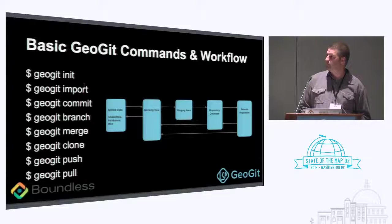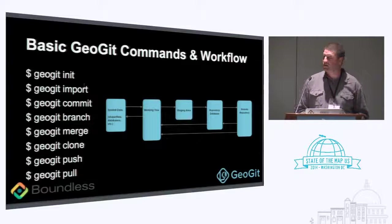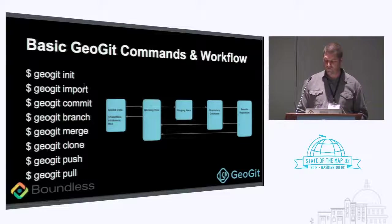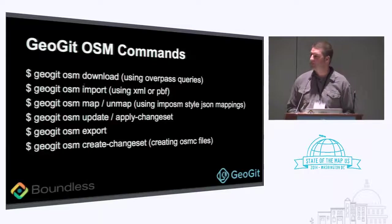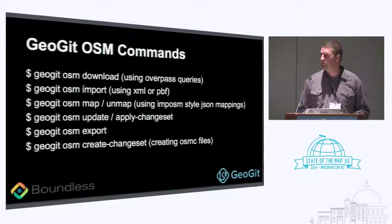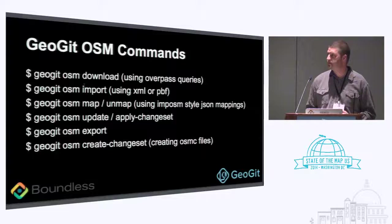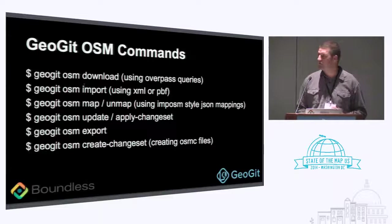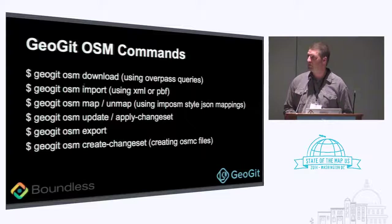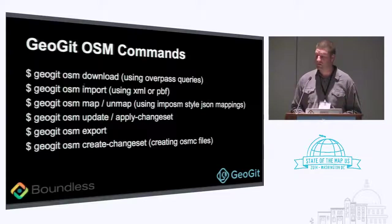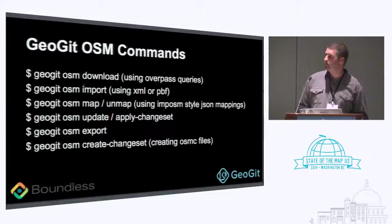Here's a graphic of the workflow: you take your spatial data, import it into your working tree, commit it into the staging area and into the repository database, and then you can push and pull from a remote repository. There's a whole suite of GeoGit OSM commands, so you can do a GeoGit OSM download using the Overpass API, which is great. I think Overpass is one of the more underused tools in the OSM stack.